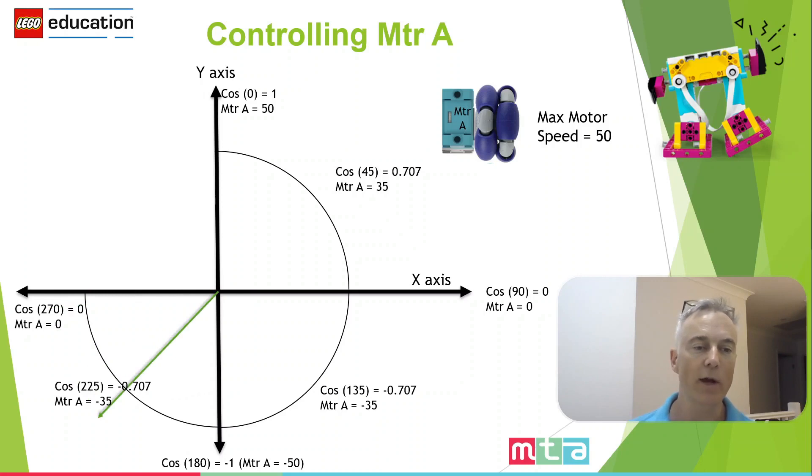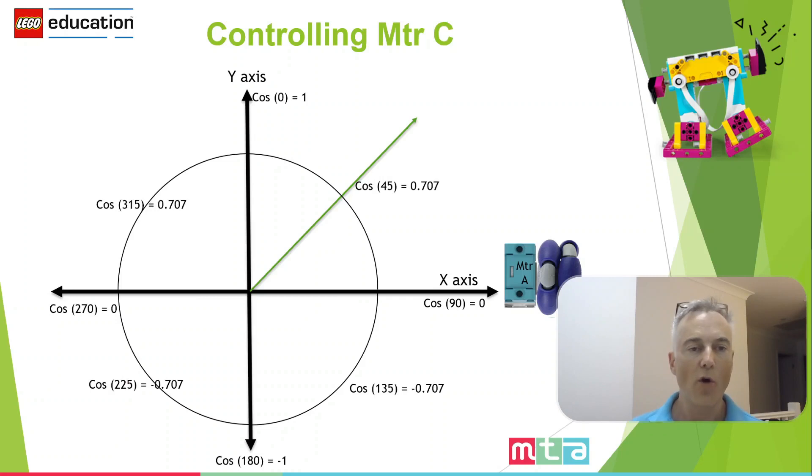And so in between that, we've got a negative speed there. If we're heading backwards at an angle of 225. And it'll be the same up top there in that second quadrant of the Cartesian plane, where it's say 315 degrees, we'd be heading off, we'd be wanting a contribution to the direction of about 35, motor A turning at a forward speed of 35.